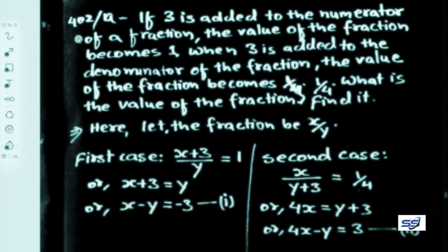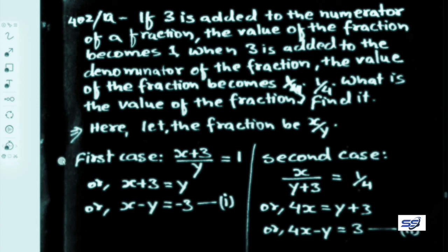Question 402a: If 3 is added to the numerator of a fraction, the value becomes 1. When 3 is added to the denominator, the value becomes 1 upon 4. Find the fraction. Let the fraction be x upon y, where x is the numerator and y is the denominator.